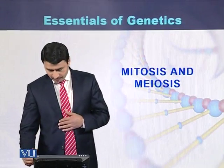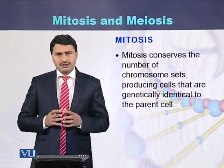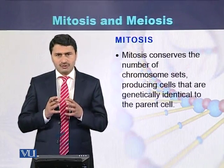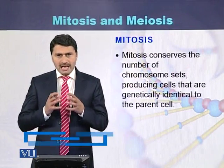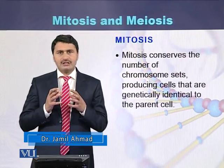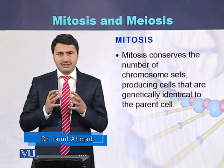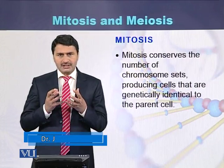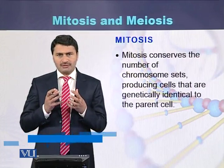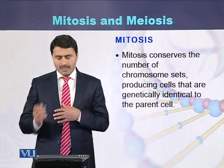Mitosis and meiosis. Mitosis conserves the number of chromosomes as a result of division of one cell into two cells. The two daughter cells which are produced from the mother cell or parent cell are genetically identical to the mother cell.